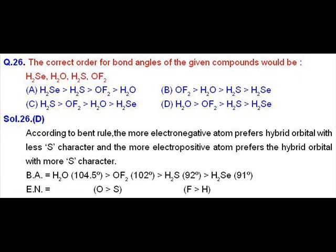Question number 26, the bond angle order should be H2O followed by OF2, then H2S, then H2Se. When you compare H2O and OF2, due to more electronegativity of F, the bond pair will shift more towards fluorine according to VSEPR theory, so bond angle decreases.